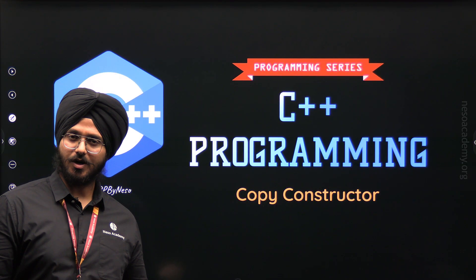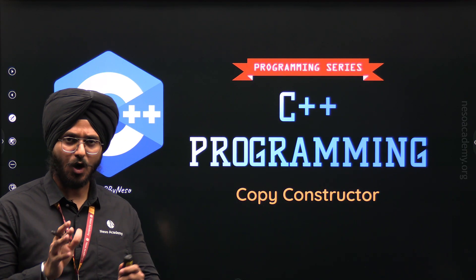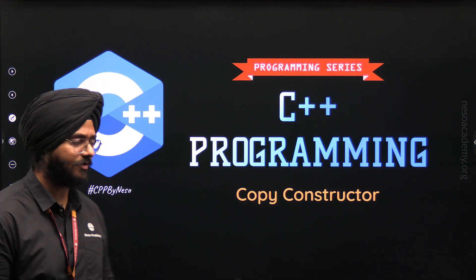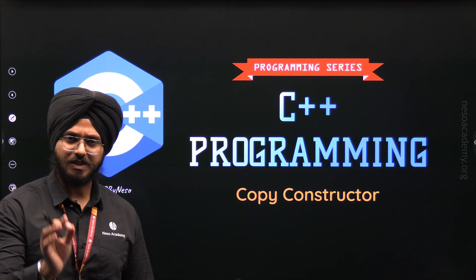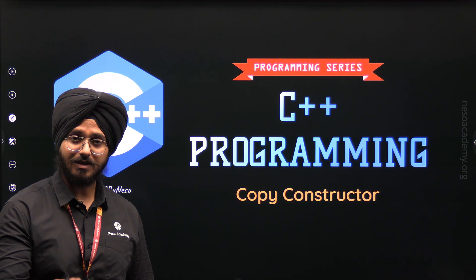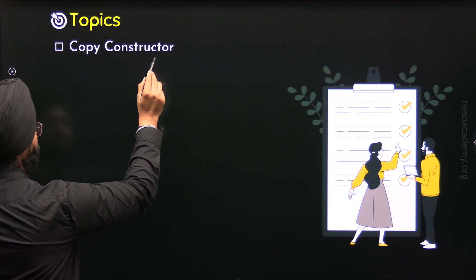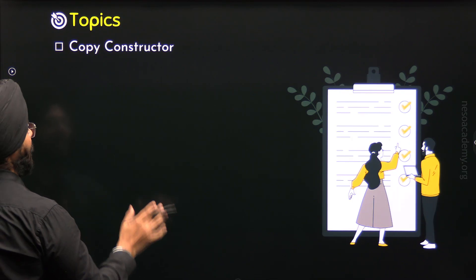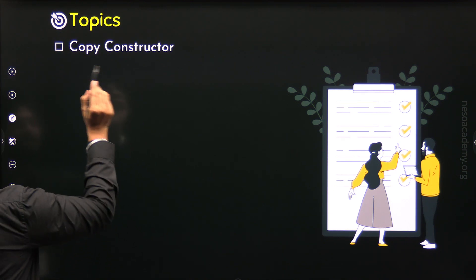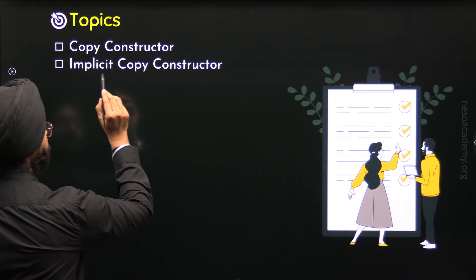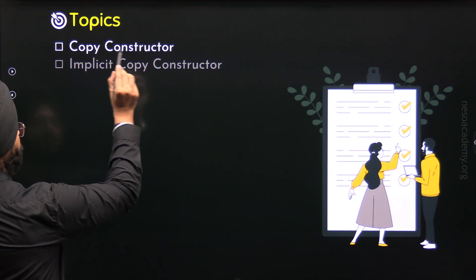We have already studied default constructor and parameterized constructor in our previous lectures. Now in this lecture, the name of this lecture is copy constructor, which is the third type of constructor we will study. So without any further delay, let's get started. The first topic is copy constructor — we will understand what it is and how we can create our own copy constructor. Then we will move to the second topic: implicit copy constructor.